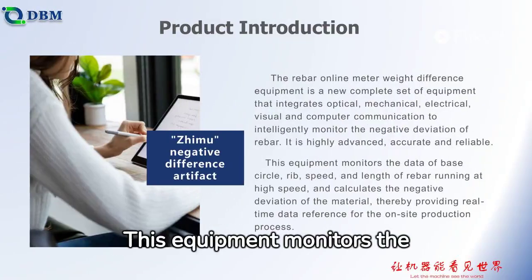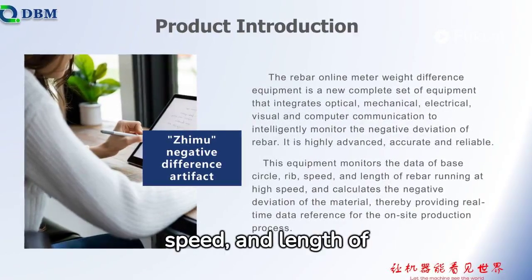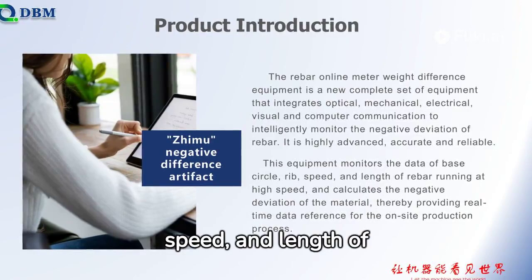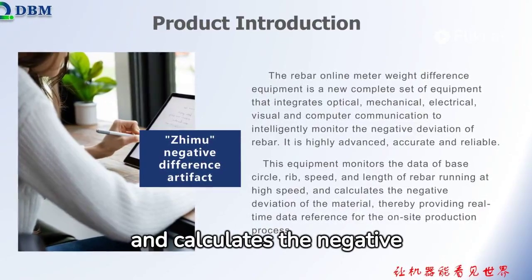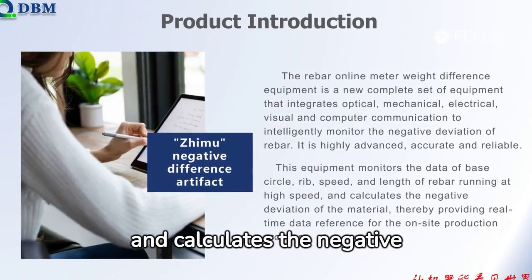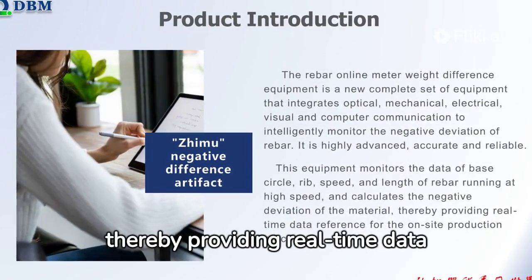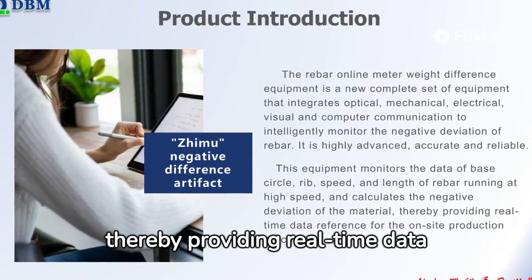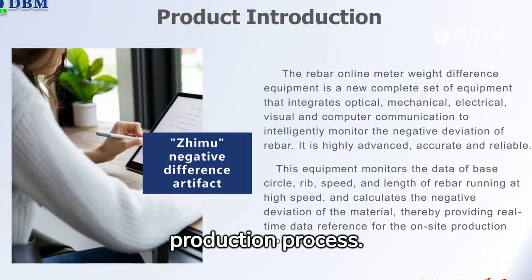This equipment monitors the data of base circle, rib, speed, and length of rebar running at high speed, and calculates the negative deviation of the material, thereby providing real-time data reference for the on-site production process.